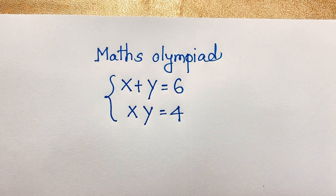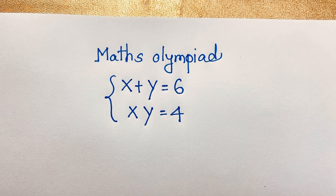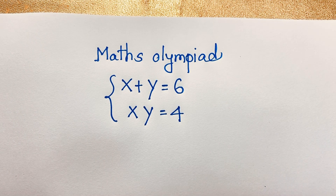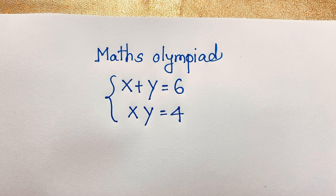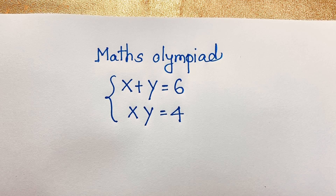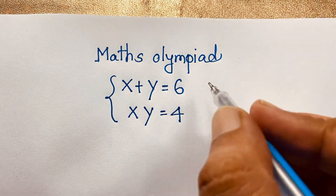Hello everyone, welcome to Russia's Classroom. Today we have solved an interesting German Math Olympiad question. Our question is x plus y is equal to 6, xy is equal to 4, and we will find out the value of x and y in this math problem. It is an easy Math Olympiad question.